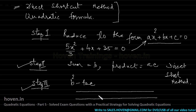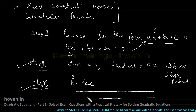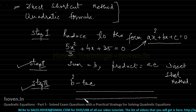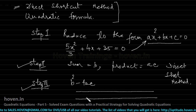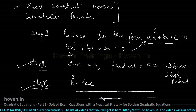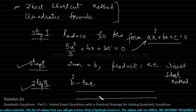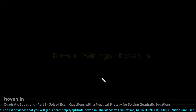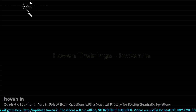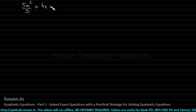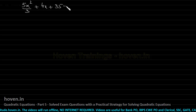Today I will take up complex examples from previous year's examination papers to show how this practical method is used. These questions will help you know the level being asked and how to solve them. We start with: 5x²/3 + 4x + 35 = 0.